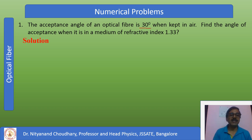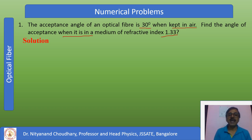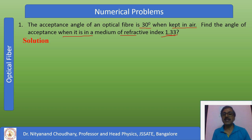Find the acceptance angle when the fiber is in a medium of refractive index 1.33. The acceptance angle of the optical fiber is 30 degrees when kept in air, and we need to find the acceptance angle in a water medium with refractive index 1.33.